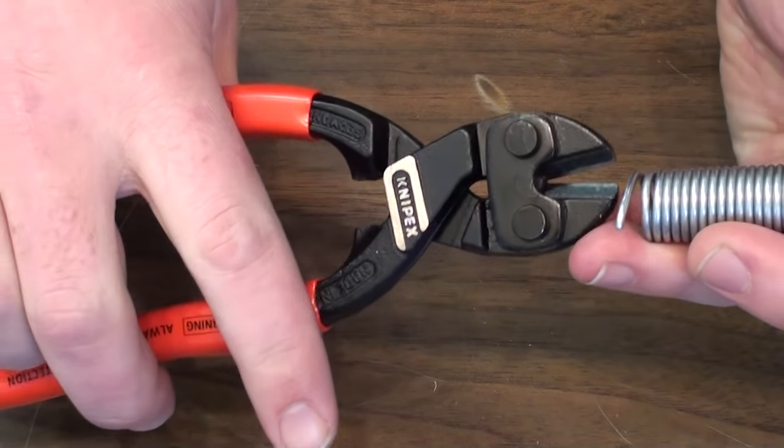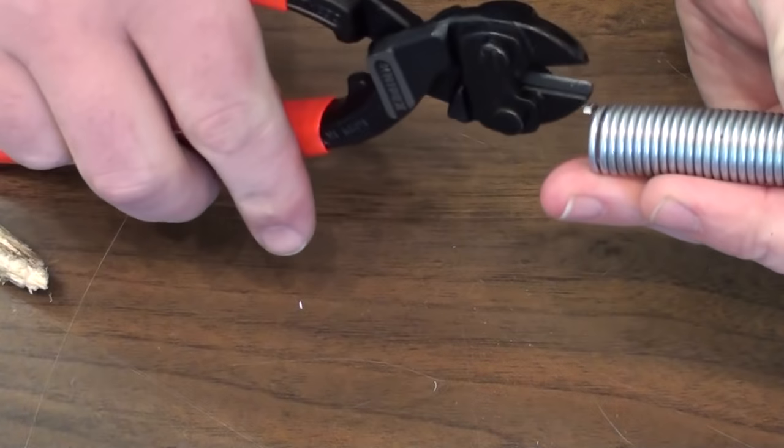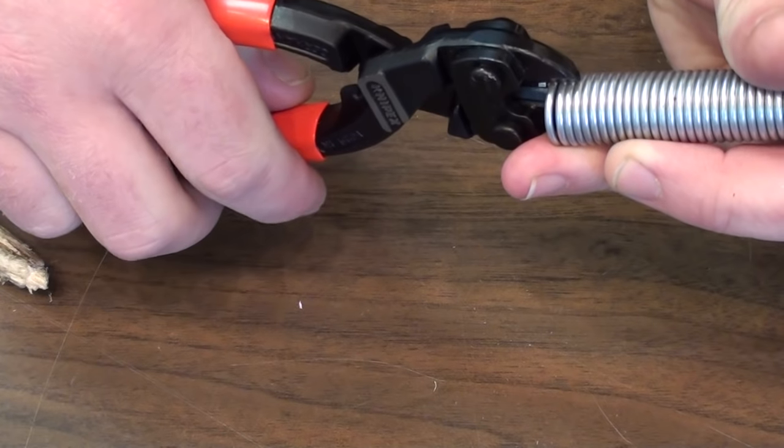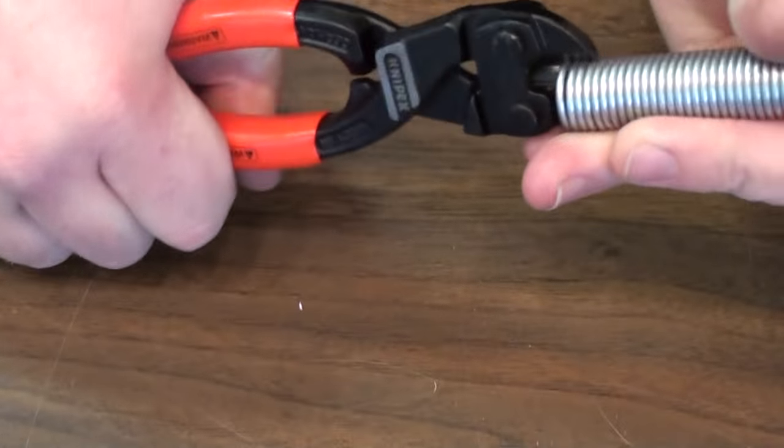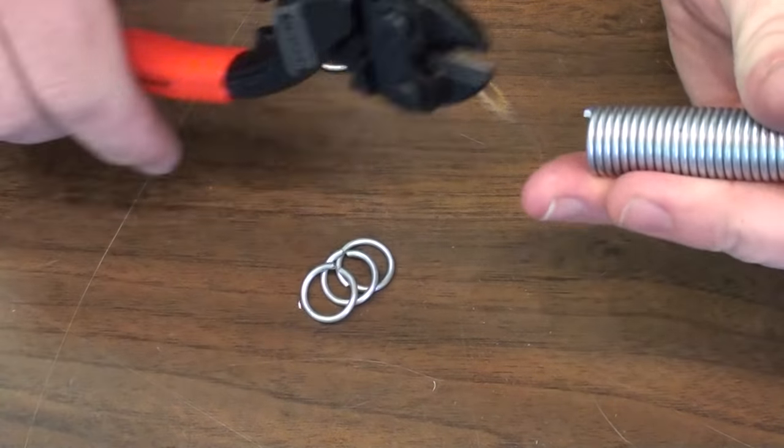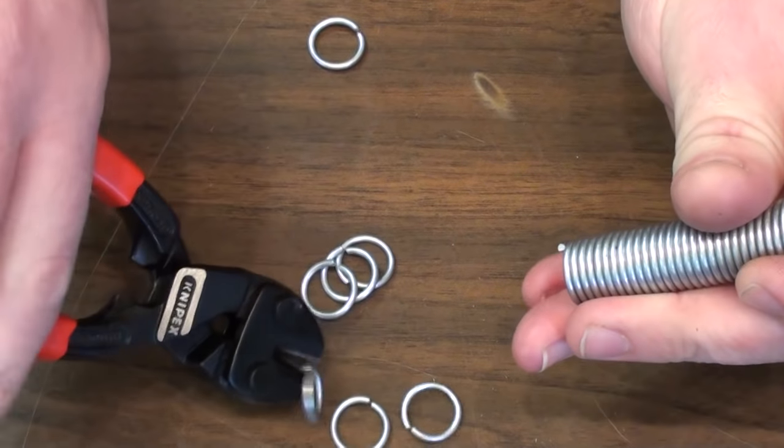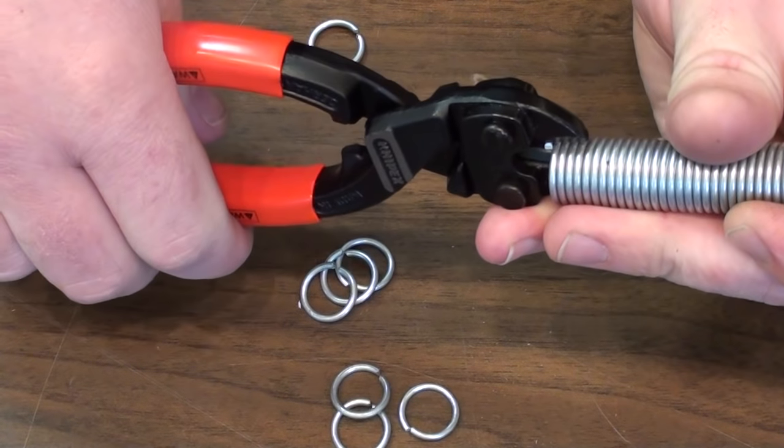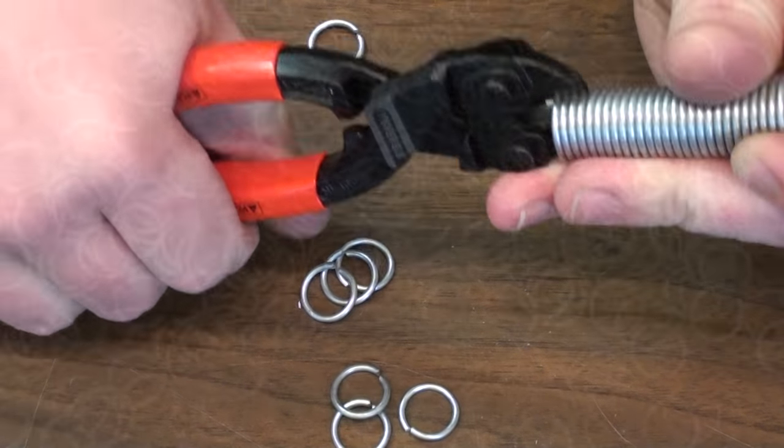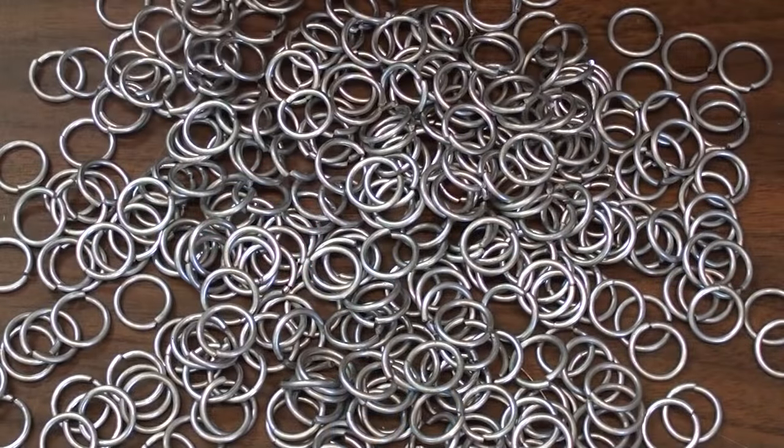You want to cut where it's rounded and not straightened off and then start cutting through. I'm using some mini bolt cutters. These are about $45 but they're worth it because you can cut four to five links at a time.